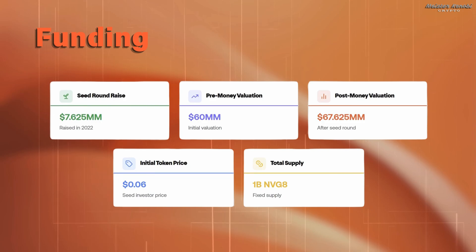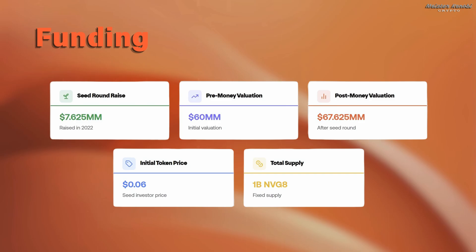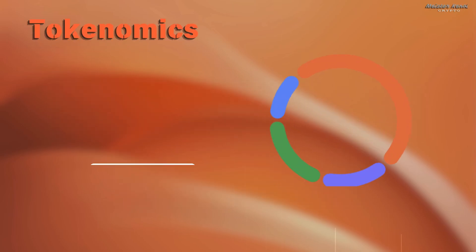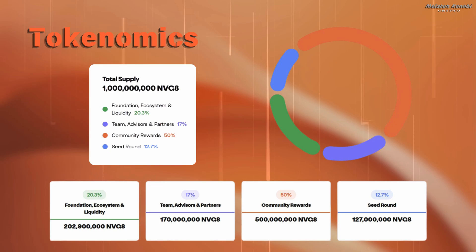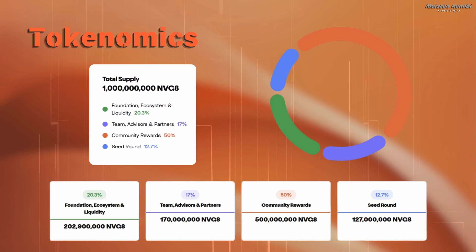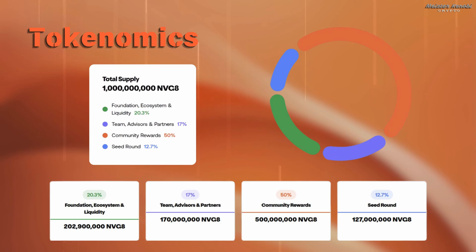Navigate has raised over 7 million dollars back in 2022 during its seeding round. The token distribution is designed to benefit the community with a notable 50% allocated specifically for community rewards, which is much higher than most other extensions.